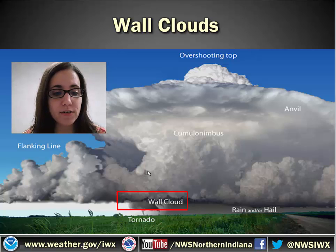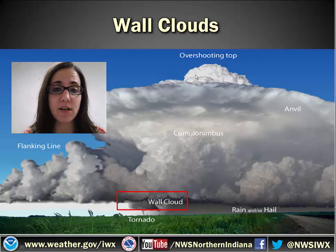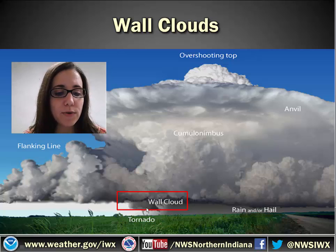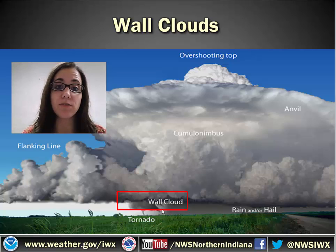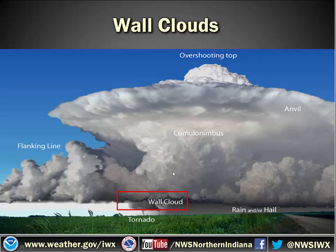This would be below the updraft. Here's the cumulonimbus and the updraft tower. You can see the overshooting top, which is another sign that the updraft is very strong. It's right below there, and it always slants — you'll notice in this picture — towards the precipitation. That's a key reminder when we talk about shelf clouds, which is a little different. So it's slanted towards the precipitation, and typically below that is where you're going to see your tornado.